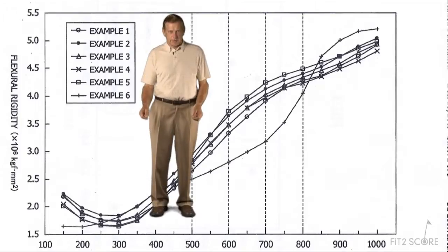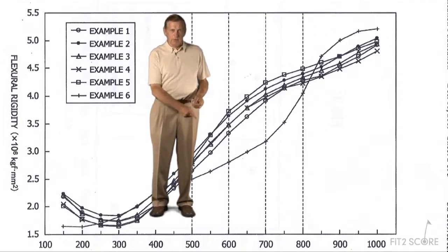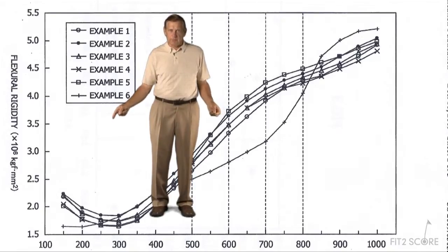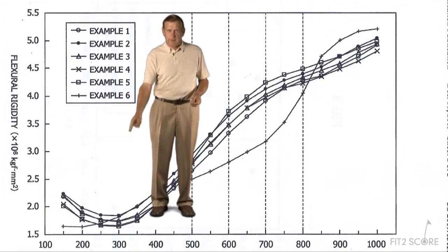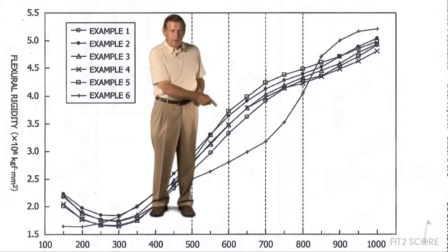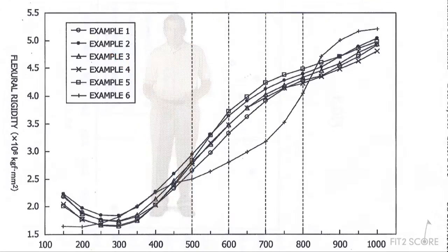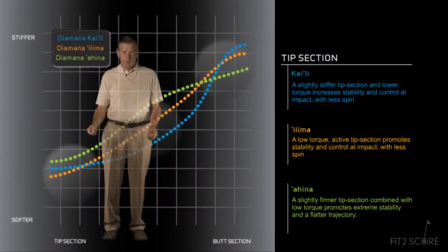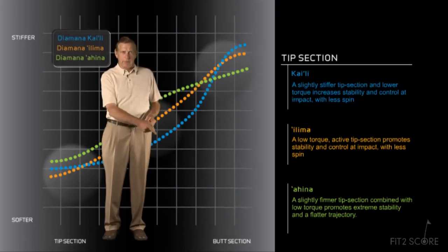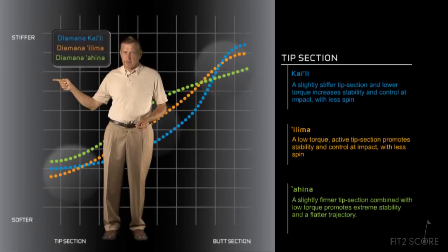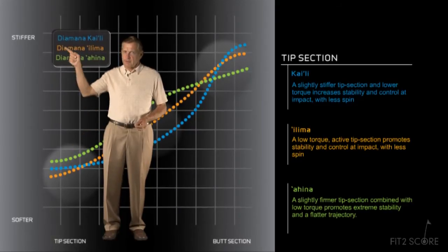Let's examine the illustration in that patent application we were looking at. Along the horizontal axis is distance from the tip — the scale starts at the tip and moves right to the butt. On the vertical axis is flexural rigidity or EI in kilograms of force. And here's the image from the Mitsubishi website again — the image is the same: tip on the left, butt on the right, stiffness on the vertical axis ascending from soft at the bottom to stiffer as you go upward.